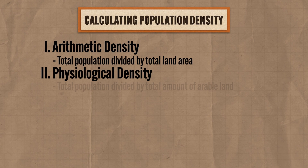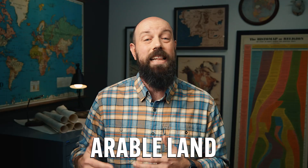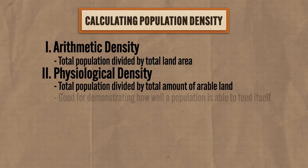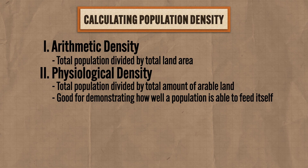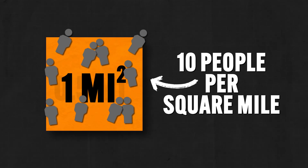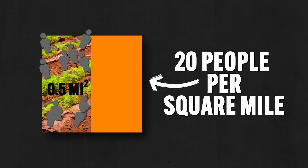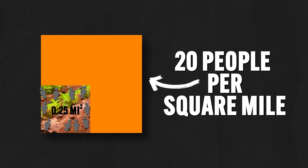That leads us to physiological density, which is the total population divided by the total amount of arable land — land that can be used for agriculture. This measurement is good for demonstrating how well a population is able to feed itself. So if our arithmetic density is ten people per square mile, but only half the land is suitable for farming, physiological density becomes twenty people per square mile. If only a quarter of the land can grow food, physiological density is forty people per square mile. The higher the physiological density, the more pressure on farmland to produce enough food; the lower the number, the more likely the land will produce enough food for everyone.